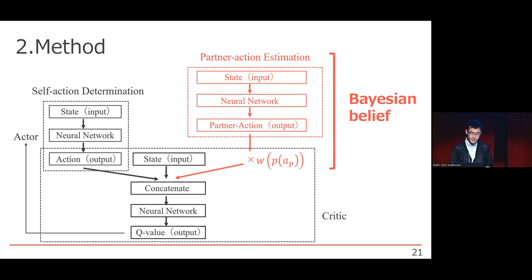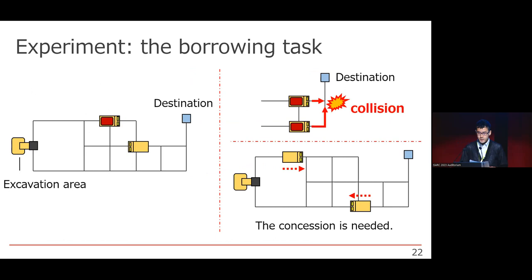The partner action estimation network was added, and the combination of three networks enabled a truly good choice for agents. As I explained, we combined the deep learning model and the multiple equilibrium action choice theory and attempted to solve the collision problem.